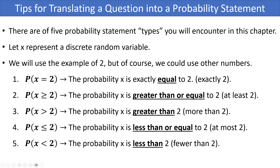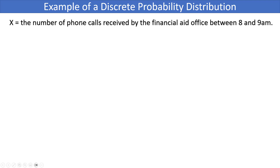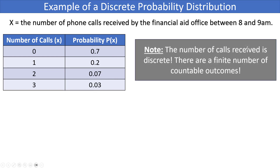Let's look at an example of a discrete probability distribution. Let our variable X represent the number of phone calls received by the financial aid office between 8 and 9 AM. The distribution table has possible values in the first column and probabilities in the second. This office receives anywhere from 0 to 3 calls. The most common case is 0 calls at 70%; the least common is 3 calls at 3%.